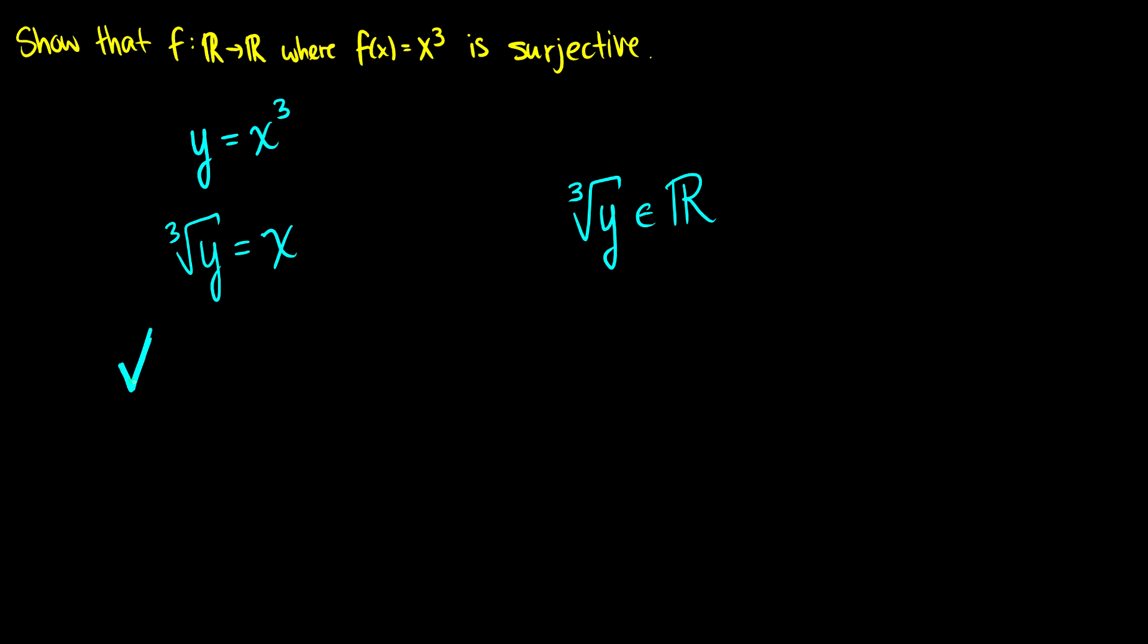The fun thing about this is that it's also bijective because we can take f(y) equals f(x) and we can prove that x is equal to y. So this is a bijective function which means it also has an inverse, and this is going to be its inverse where the cubed root of f(x) is equal to x.